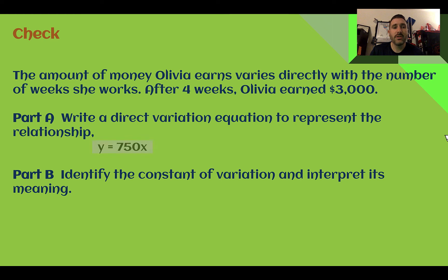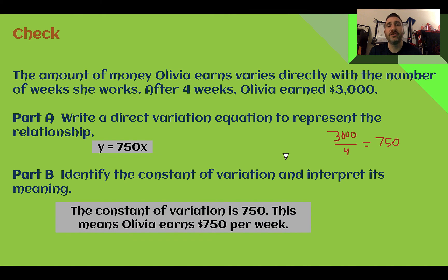Check your answer. First, the direct variation equation is y equals 750x. In order to find that unit rate or slope, we take our total, she is earning $3,000, and it took her 4 weeks to do that. So, 3,000 divided by 4 is 750. That's how much she can earn in one week. Our constant of variation, then, is $750. In this context, that is how much she earns in one week. She earns $750 each week.